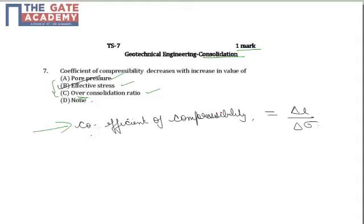Now, coefficient of compressibility is the change in void ratio per unit change in stress.